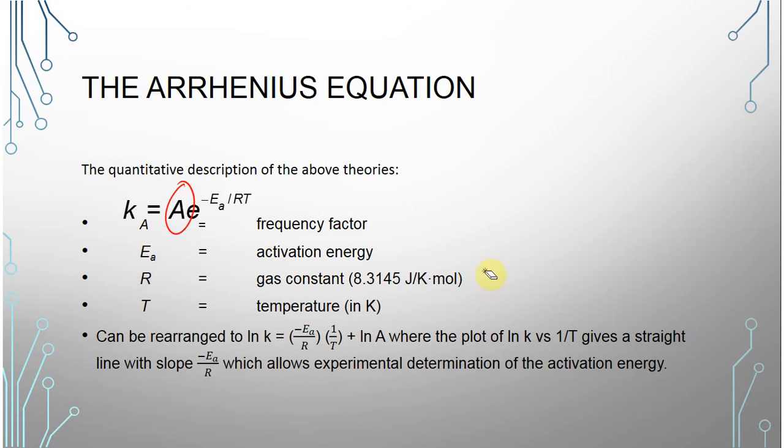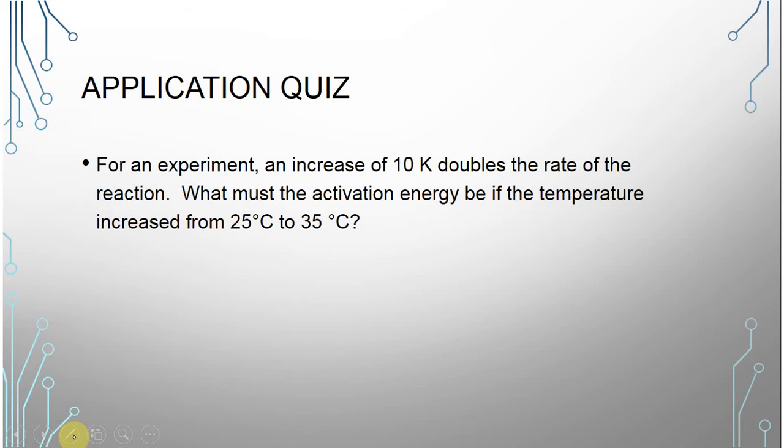The way that we really deal with this is that we can end up graphing natural log of K is equal to negative EA over R times 1 over T plus the natural log of A. And what this really tells us is in this plot of natural log versus 1 over T, we can end up getting a slope that tells us how much energy we need to get the reaction to occur. It allows us to get all kinds of information by graphing this.